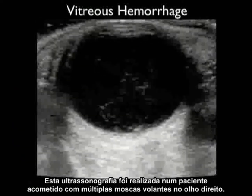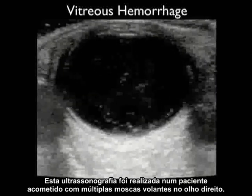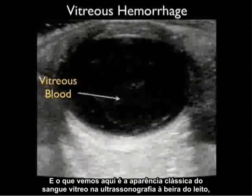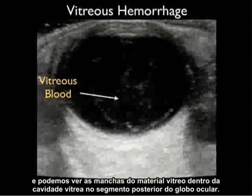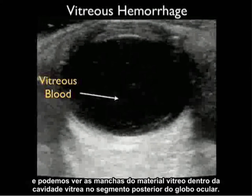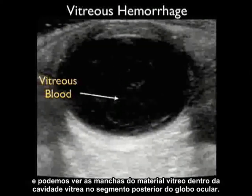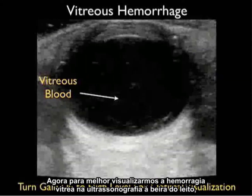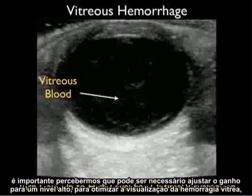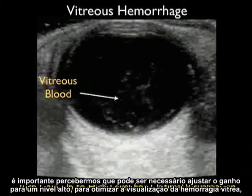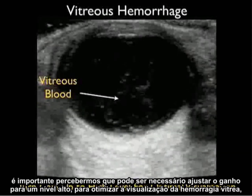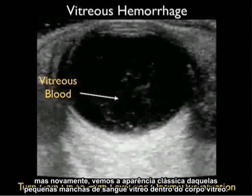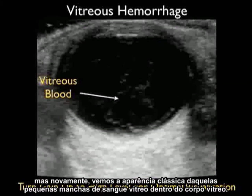This ultrasound was taken from a patient who experienced multiple floaters within their right eye, and what we see here is the classic appearance on bedside ultrasound of vitreous blood. We can see the speckles of vitreous material within the vitreous cavity, the posterior aspect of the eyeball. To best visualize vitreous hemorrhage on bedside ultrasound it's important to turn the gain up to a high level. Again we see the classic appearance — those little speckles of vitreous blood within the vitreous body.